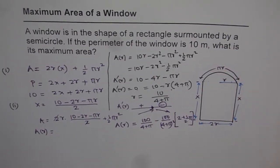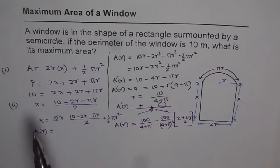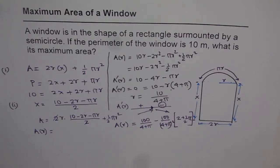To summarize the strategy: write the expression for the area of the window, identify the two variables (radius r and rectangle height x), relate them using the perimeter constraint to get an equation in one variable, differentiate, use the first derivative test to confirm the maximum, and then compute the final answer. These are the steps involved in solving such optimization questions.